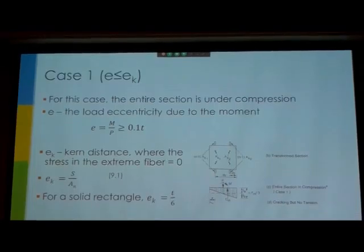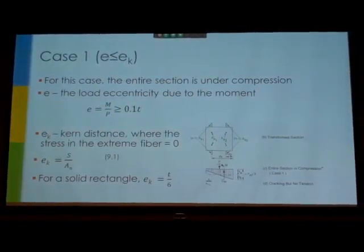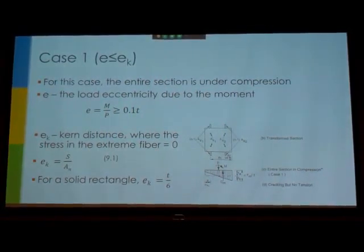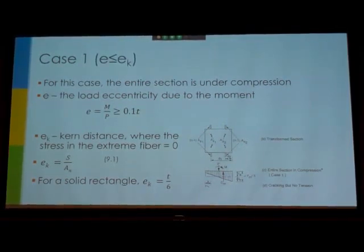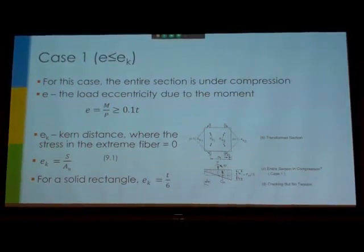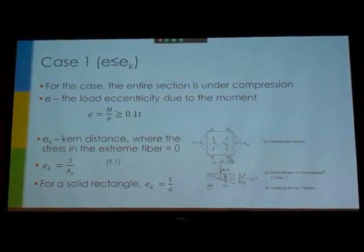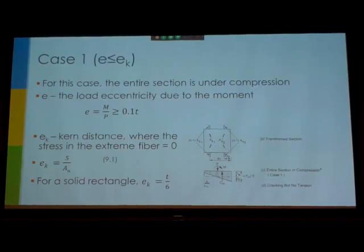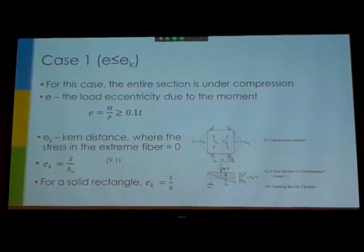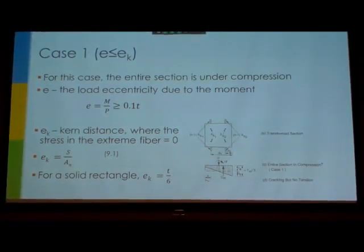First point we're going to examine: our entire masonry section is in some amount of compression. Now there is a minimum eccentricity that you have to put on every column you design, so it's not even. You'll notice this trapezoid at the bottom right, it's not an even distribution, but all of the masonry is in compression, which means compression controls. One important term you need to know is the kern distance, and that's basically where the stress on the left side of your cross section goes to zero and the masonry there isn't in any compression or tension, it just has no stress. So for a normal rectangle, your kern distance is t over 6.